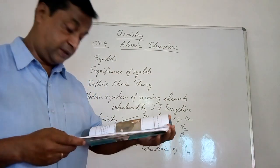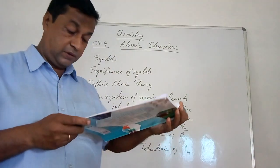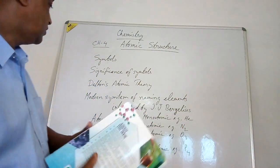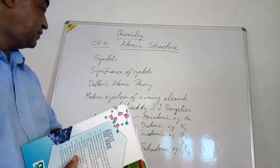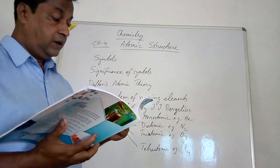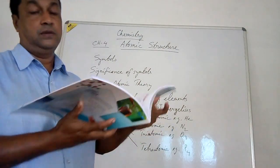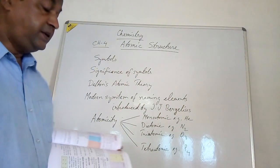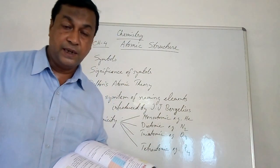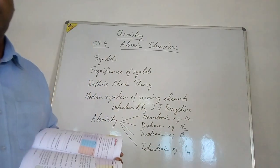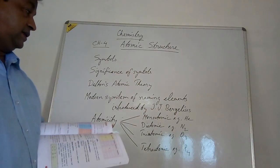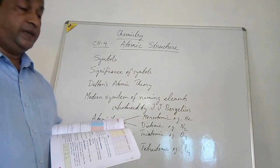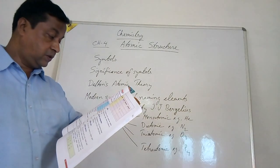Next, let's look at atomicity. Atomicity means the number of atoms present in one molecule of that element.